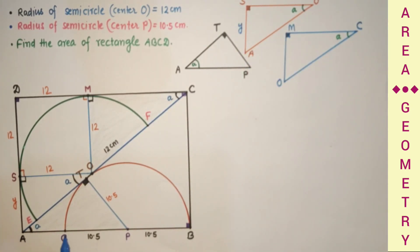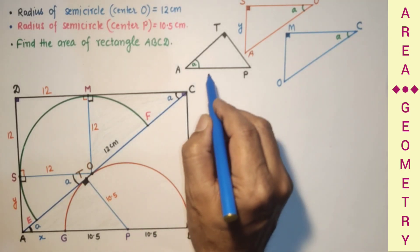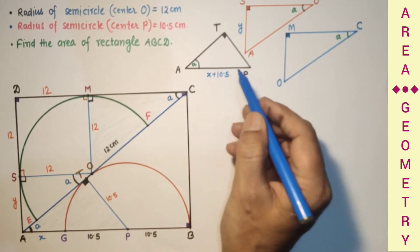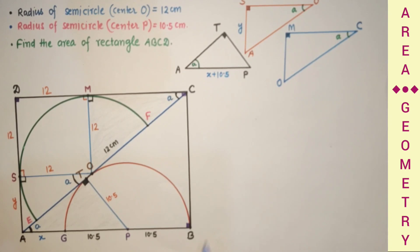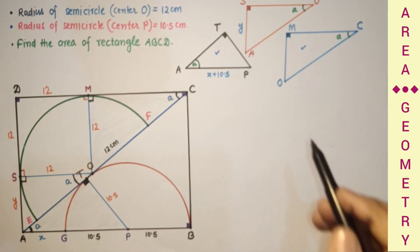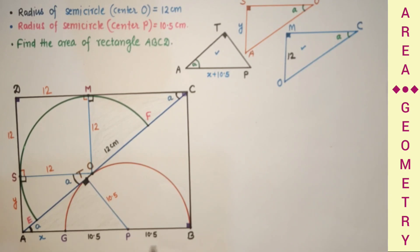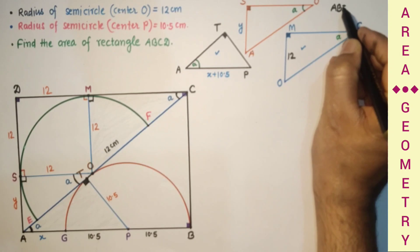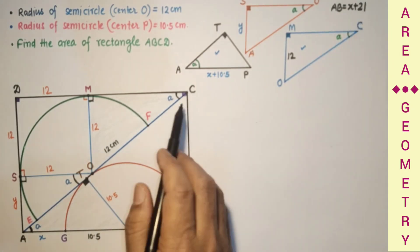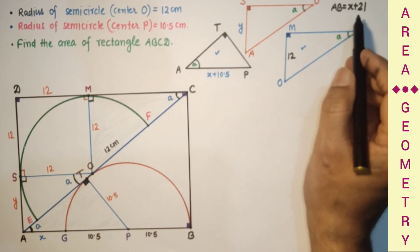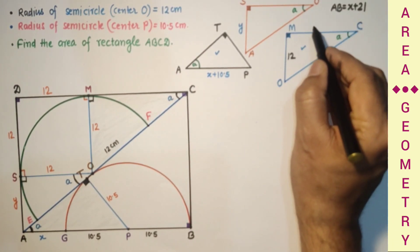Let AS = Y. Let AG = X, so AP is equal to X plus 10.5. Using corresponding sides are proportional, MO is 12. AB is X plus the sum of the two radii, which is 21, so AB = X + 21. To get MC, subtract 12 from AB, so MC = X + 21 − 12 = X + 9.